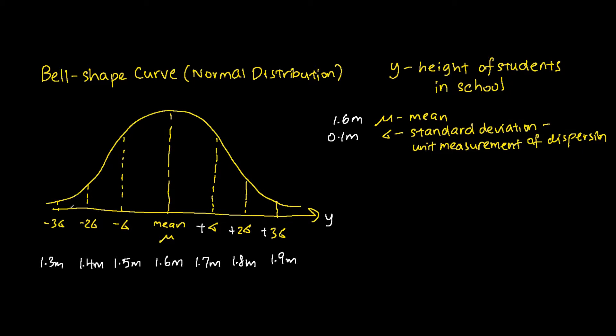The area under the curve represents the probability — in this case, the probability of a student with height between a certain value, or within a certain range of heights.